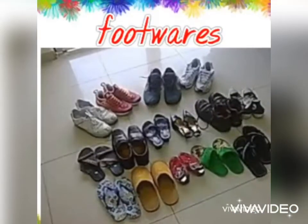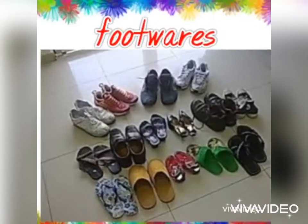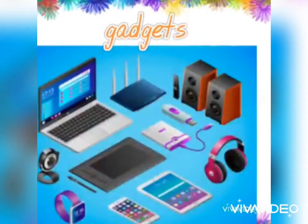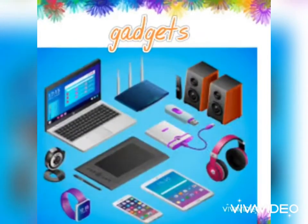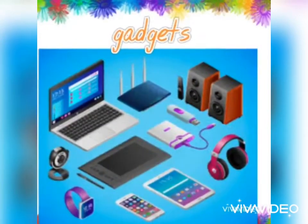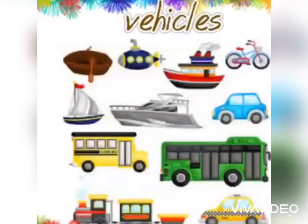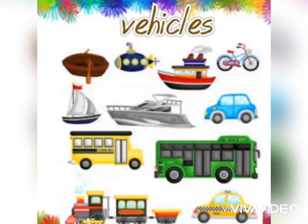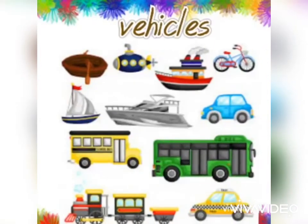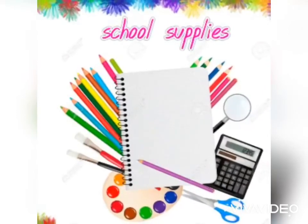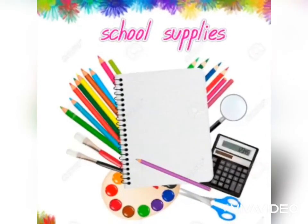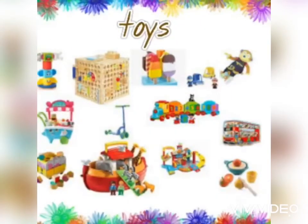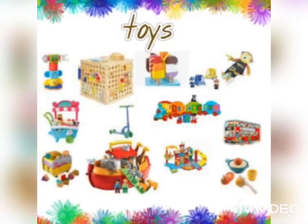Footwares like slippers, shoes, and sandals. Gadgets like cell phones, tablets, and laptops are artificial materials. Vehicles like your car, bicycle, bus, or boat. School supplies are artificial materials like notebooks, calculators, and scissors. Your toys are also artificial materials.